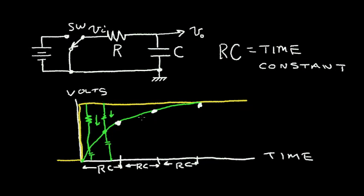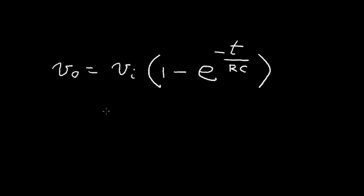We can write an equation for this V out versus V in. This is V out. This is V in or V i. It turns out that the equation for the output voltage V out is equal to the input voltage V i times one minus E to the minus T for time, divided by the RC time constant, RC, close bracket. Now, E is a natural logarithm. E is equal to 2.7182, so on and so on. So E is a constant. Again, T is time, RC is time constant, and V i is V in.